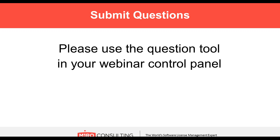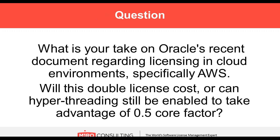The first question: what is your take on Oracle's recent document regarding licensing in cloud environments, specifically AWS or Amazon Web Services? Will this double license cost, or can hyper-threading still be enabled to take advantage of the 0.5 core factor?